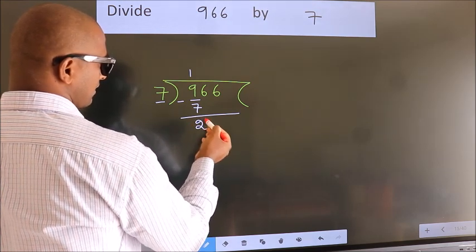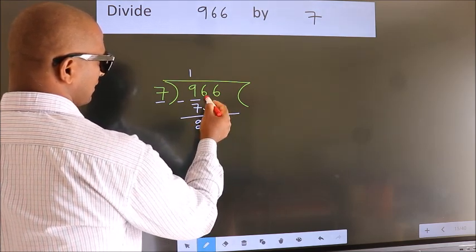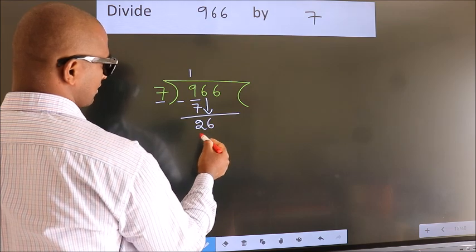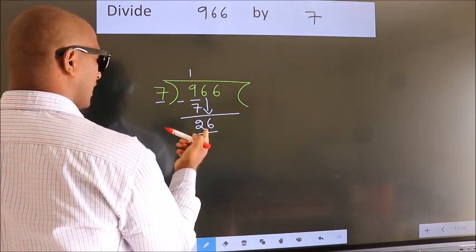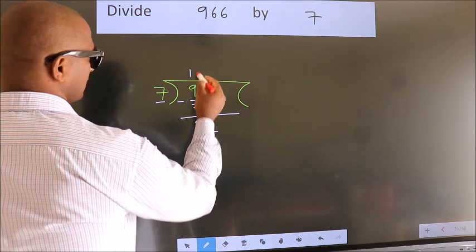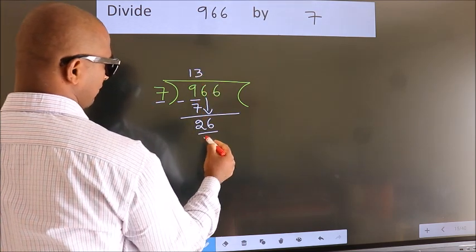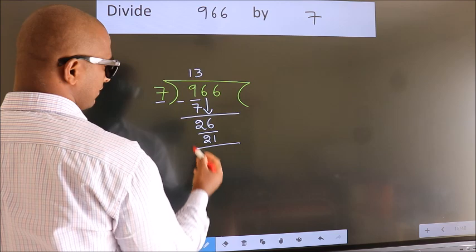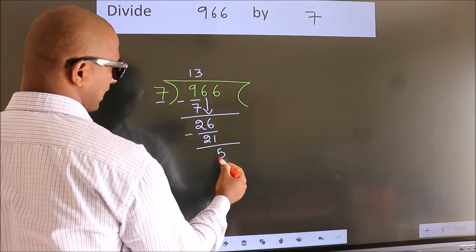After this, bring down the beside number. So, 6 down. So, 26. A number close to 26 in the 7 table is 7 threes, 21. Now, we subtract. We get 5.